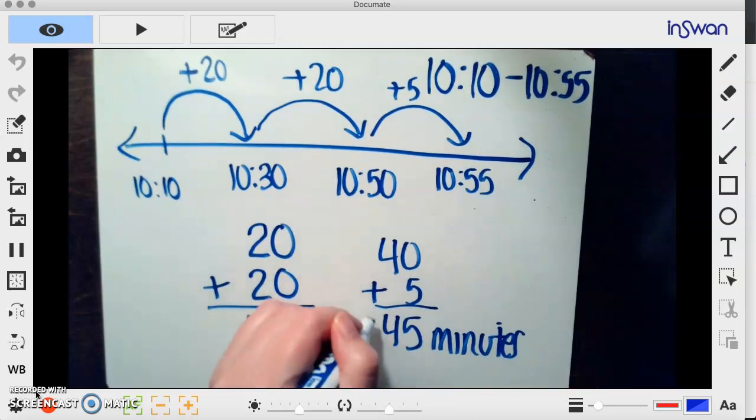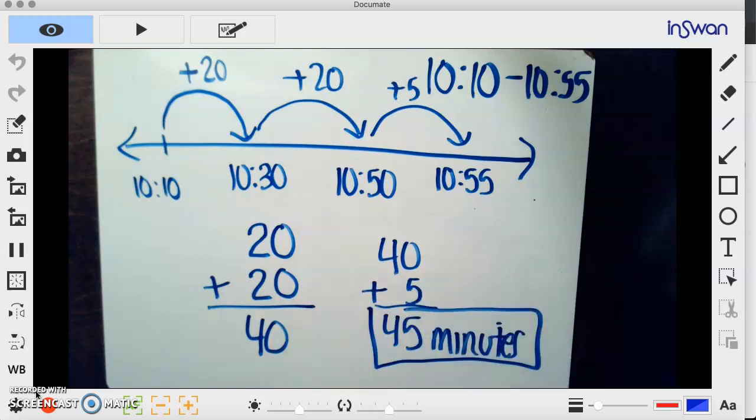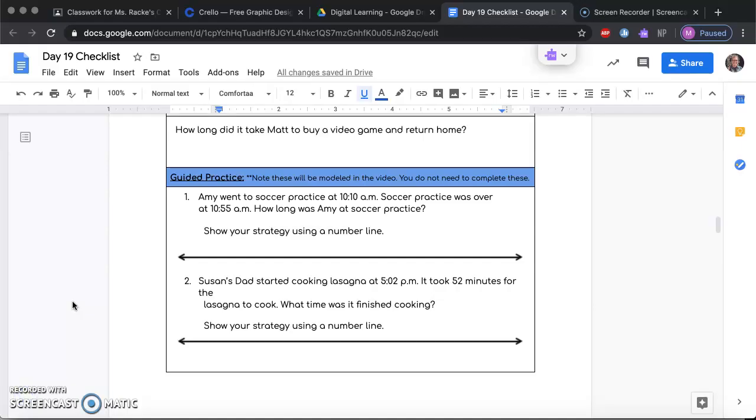So how long was Amy at soccer practice? Amy was at soccer practice for 45 minutes. Our second guided practice question says: Susan's dad started cooking lasagna at 5:02 p.m. It took 52 minutes for the lasagna to cook. What time was it finished cooking? Show your strategy using a number line.